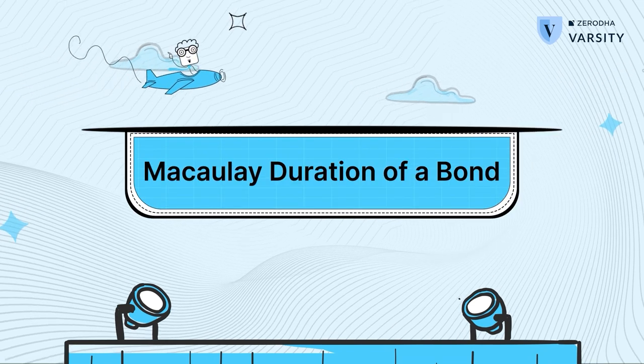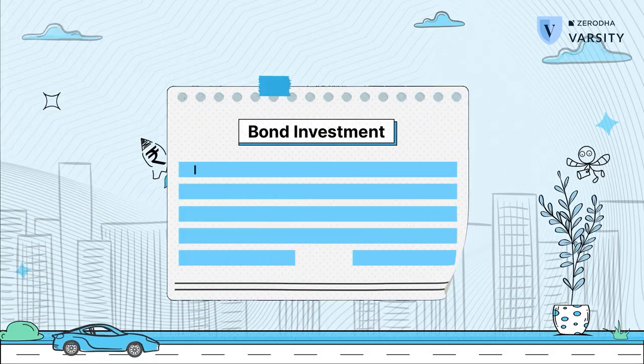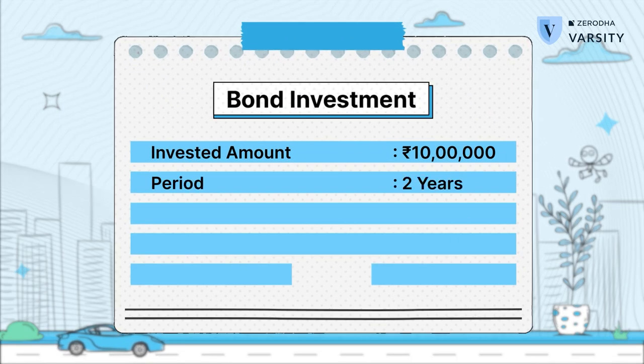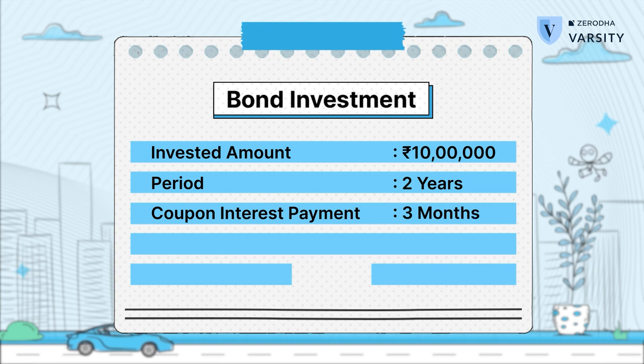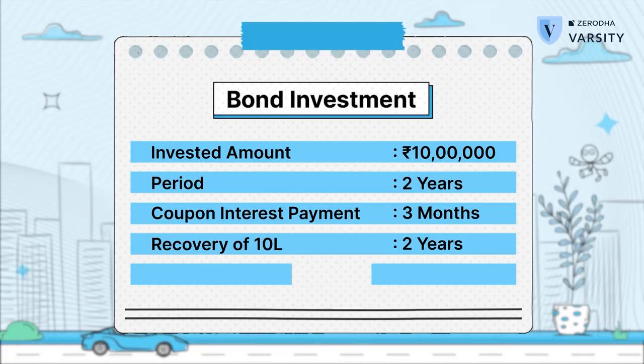Let's start with the Macaulay duration of a bond. Let's assume that you invest Rs 10 lakhs in a bond maturing in two years. Let's also assume that the bond pays an interest payment or a coupon payment once every three months, and at the end of two years you also expect the principal amount to be returned. If you were to do all the bond math to figure out how long it would take for you to recover the invested amount, then the answer won't be two years, but it will be a number slightly less than two years — let's say 1.8 years. In this case, 1.8 is considered the duration of the bond. The duration indicates how long it would take for you to recover your invested amount, and this is a very important bond metric.